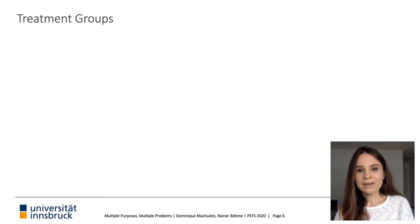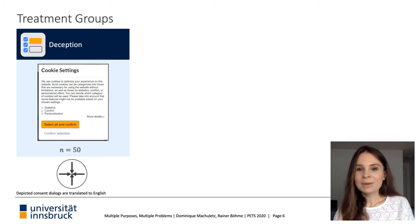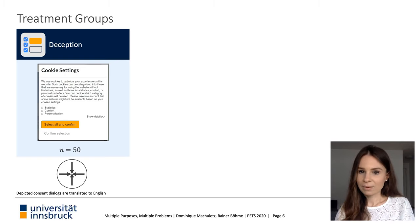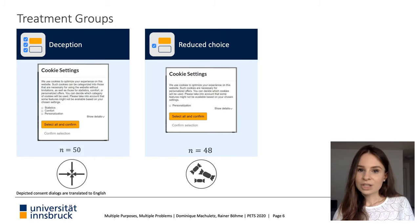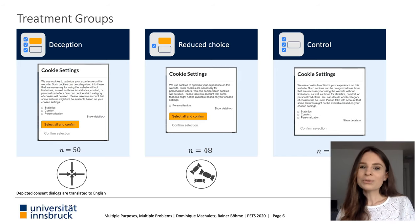We divided our sample into three randomly assigned groups who saw different cookie dialogues. The first group saw a deceptive dialogue exactly as observed on a large airline website, containing explanation text, three selectable purposes with checkboxes, an expandable details section, and two buttons — the first button labeled 'Select all and confirm' is highlighted, while the second is colorless and says 'Confirm selection.' The second treatment differs by having only one selectable purpose instead of three. The third condition, the control group, did not have a highlighted default button.